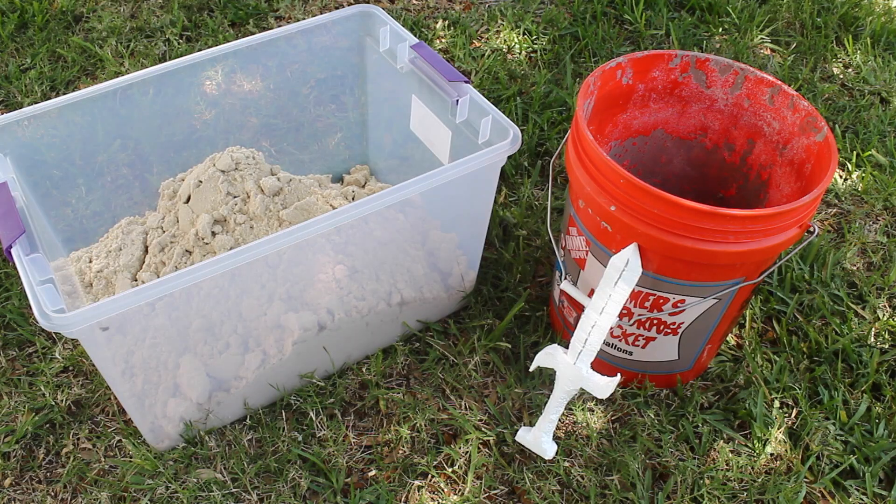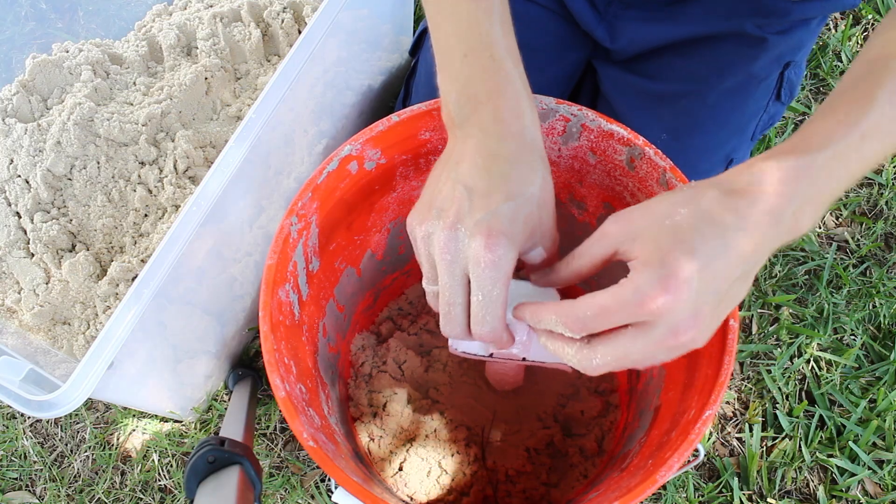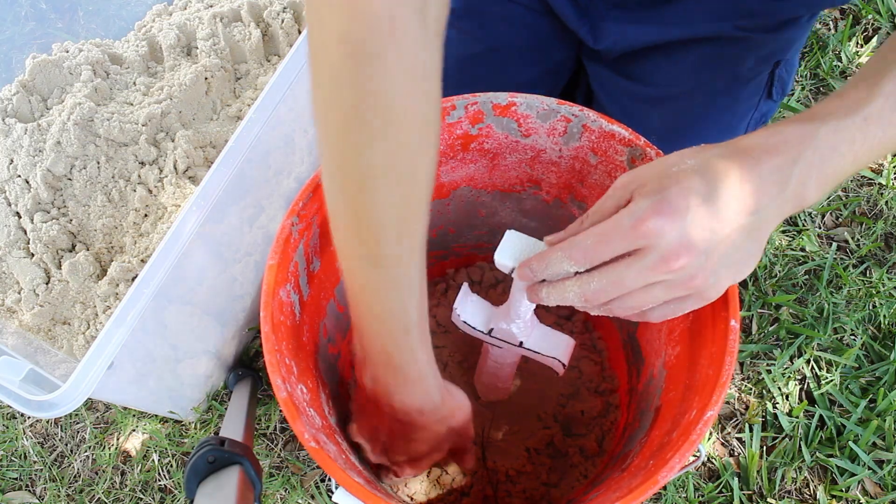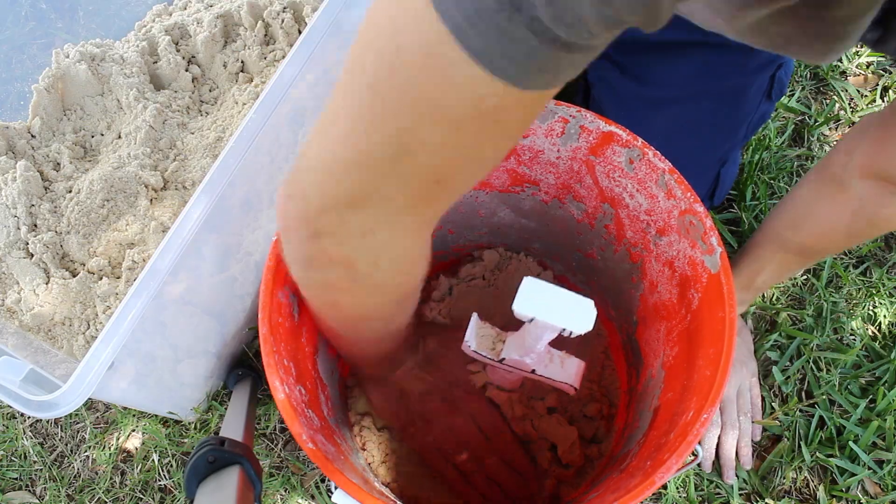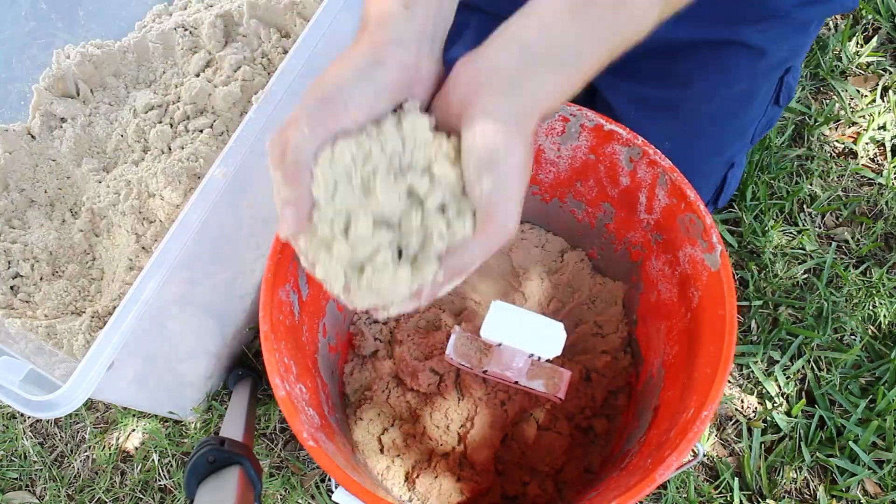Once you're done carving it's time to completely cover your object in sand. To do this just put it in a bucket and slowly add sand around making sure that there's no air bubbles formed next to your mold.